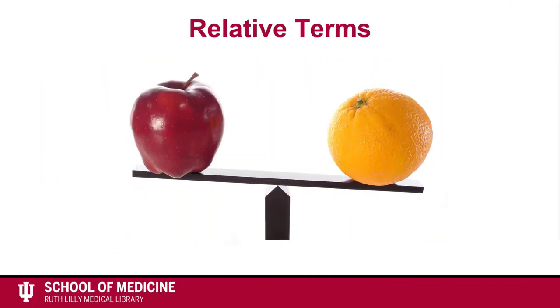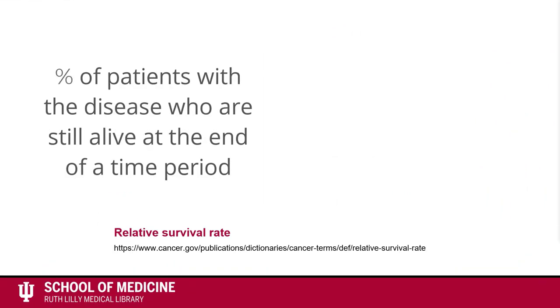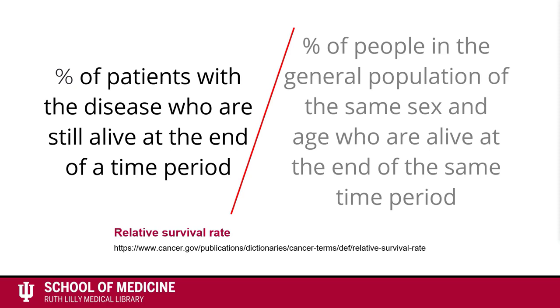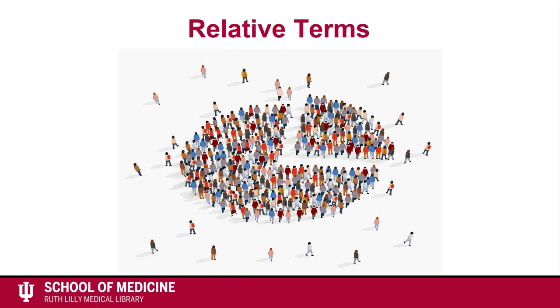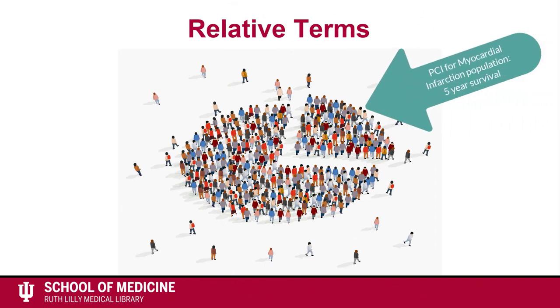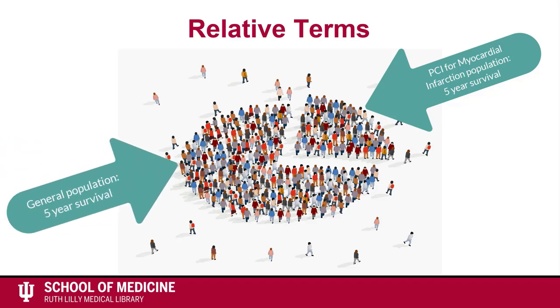Prognosis study results can also be expressed in relative terms, which is dependent on comparison with other populations. Relative survival rate is calculated as the percentage of patients with the disease who are still alive at the end of a time period, divided by the percentage of people in the general population of the same sex and age who are alive at the end of the same time period. The relative survival rate might show whether the disease shortens life or whether the treatment for disease shortens or lengthens life. For example, the survival of patients undergoing percutaneous coronary intervention, or PCI, for myocardial infarction after five years compared to the survival of the general population after five years.